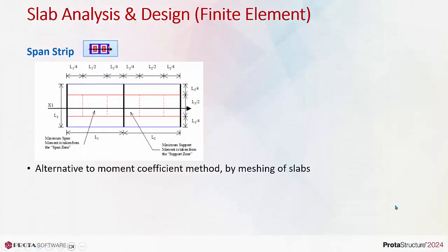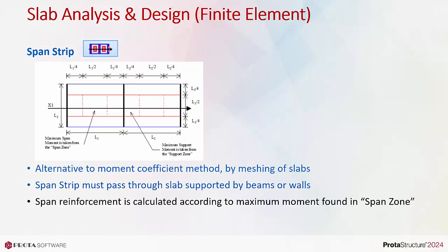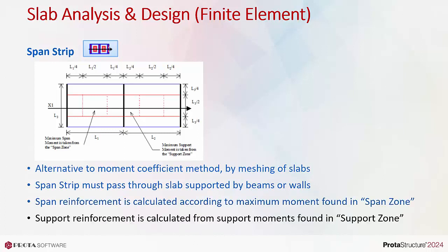Span strip is the alternative to the moment coefficient method by meshing of slabs. Span strip must pass through slabs supported by beams or walls — for example, one beam at the left side, then one slab, then one supporting wall at the right-hand side. Span reinforcement is calculated according to the maximum moment found in the span zone.